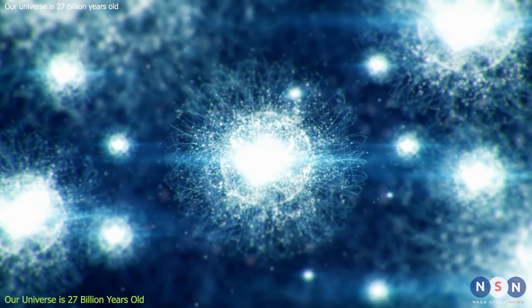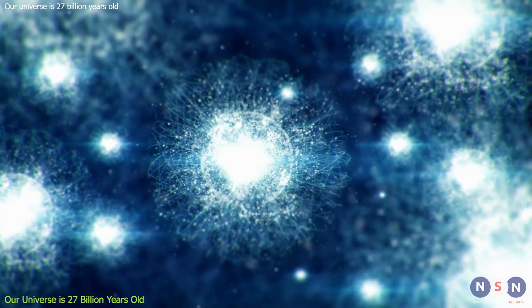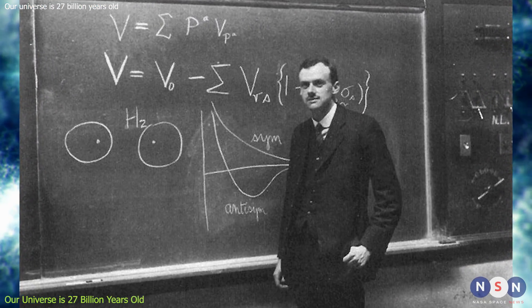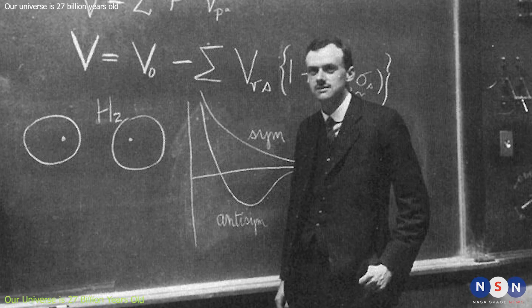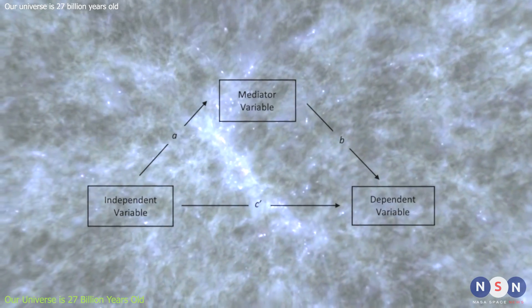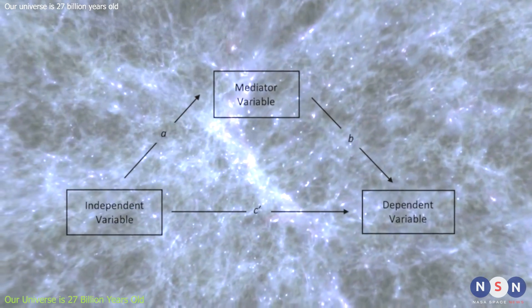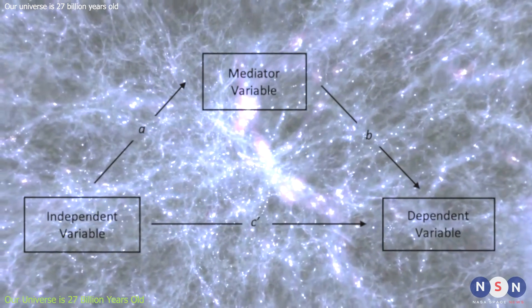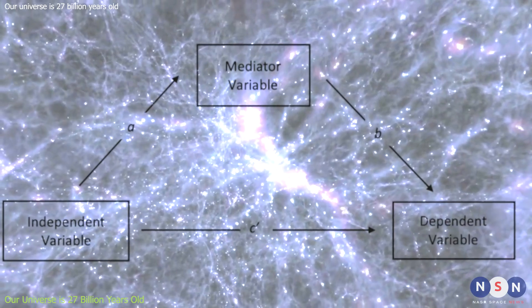That some of the fundamental physical rules that govern the interactions of particles change over time. This idea is also not new. It was suggested by a British physicist named Paul Dirac in 1937, and it is called the varying constants hypothesis. According to this hypothesis, some of the constants that we use to describe the strength of forces and the masses of particles are not really constant, but vary slowly over time.